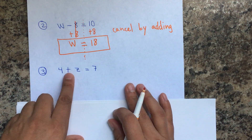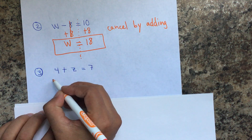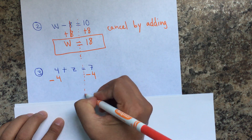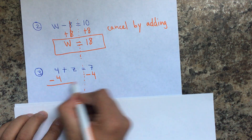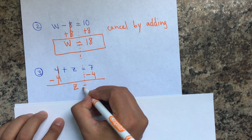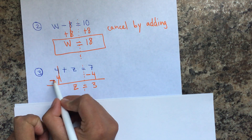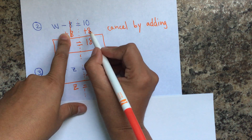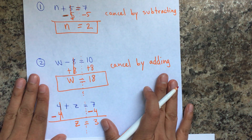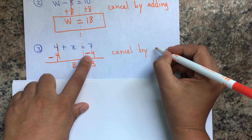Now here we have four plus Z, which is the same as Z plus four. Since this is positive, you're adding four, so the opposite is to subtract four — on both sides of the equal sign. Four minus four is zero, so that cancels and you only have Z. Seven minus four is three. Notice: this is minus, this is minus — whatever you're canceling has to be the same on both sides. Cancel by subtracting.